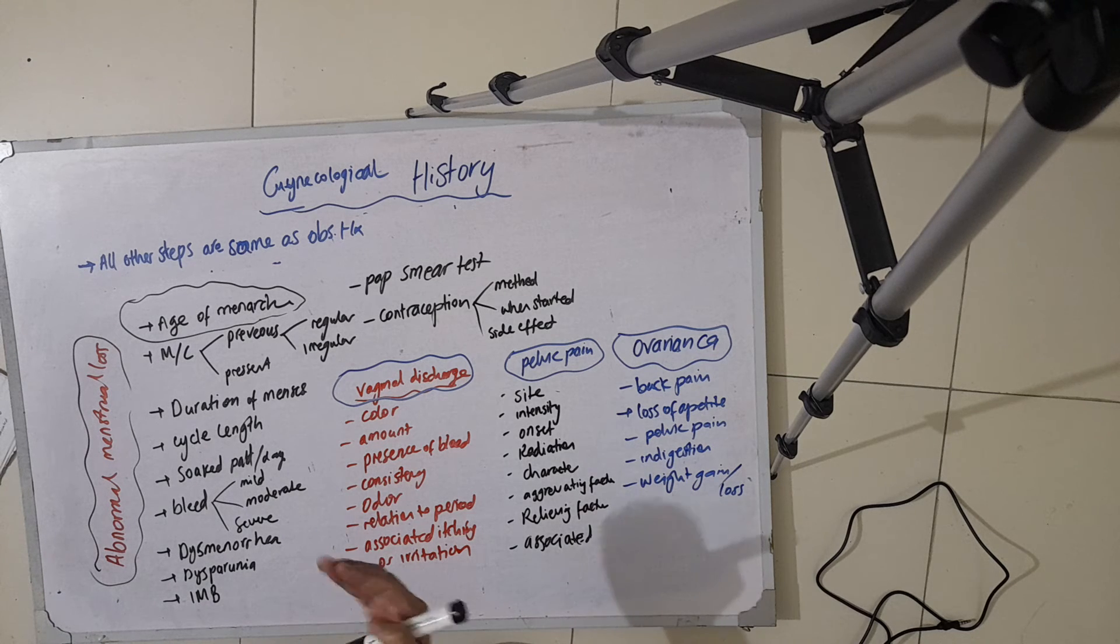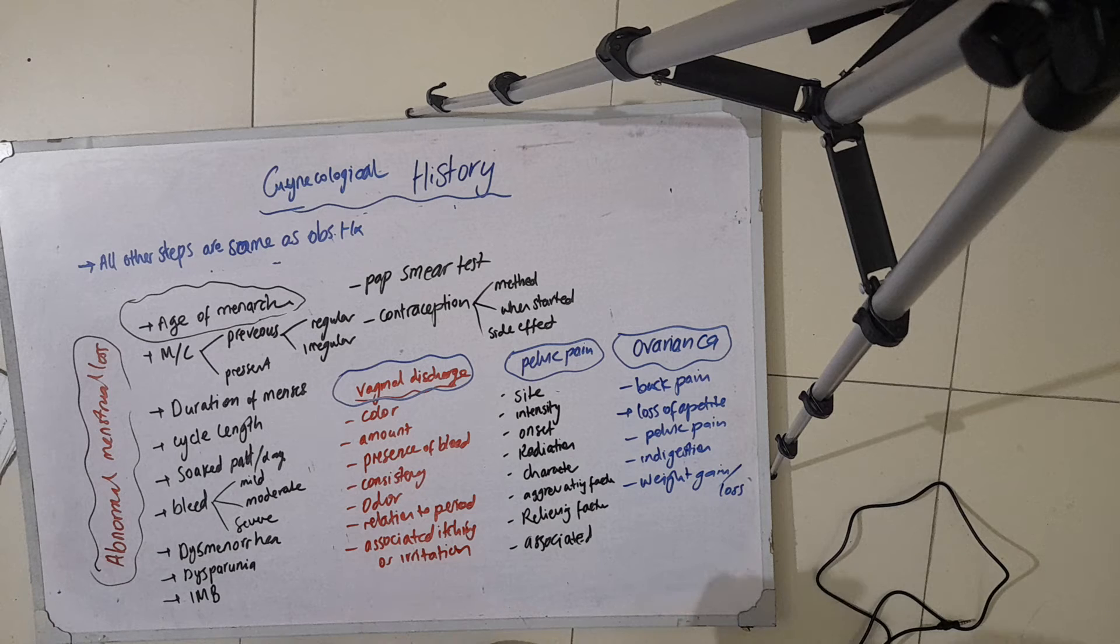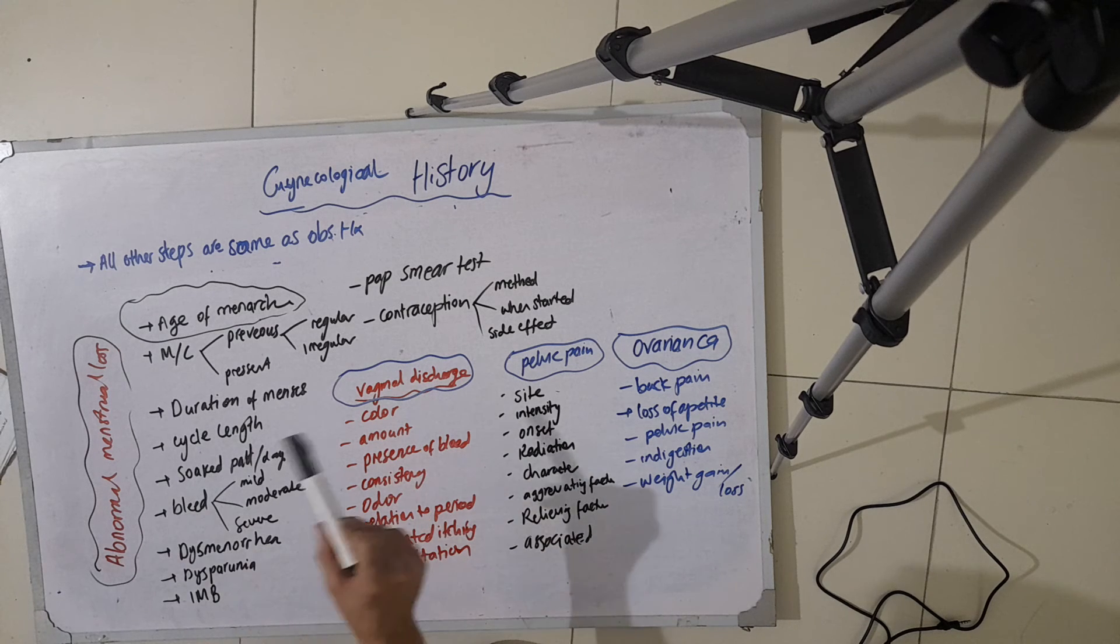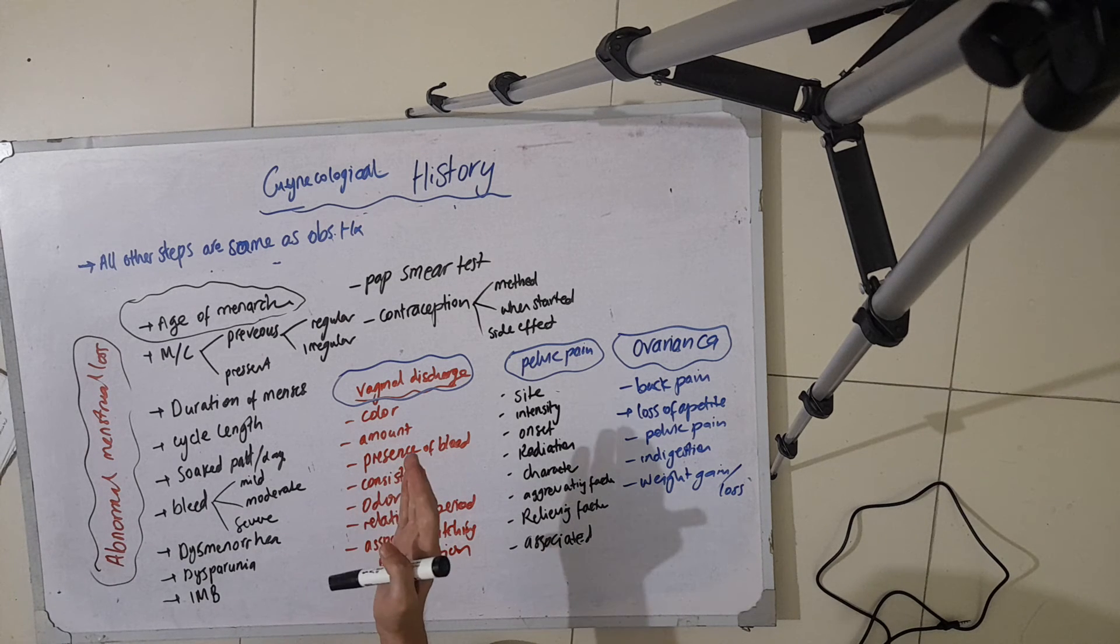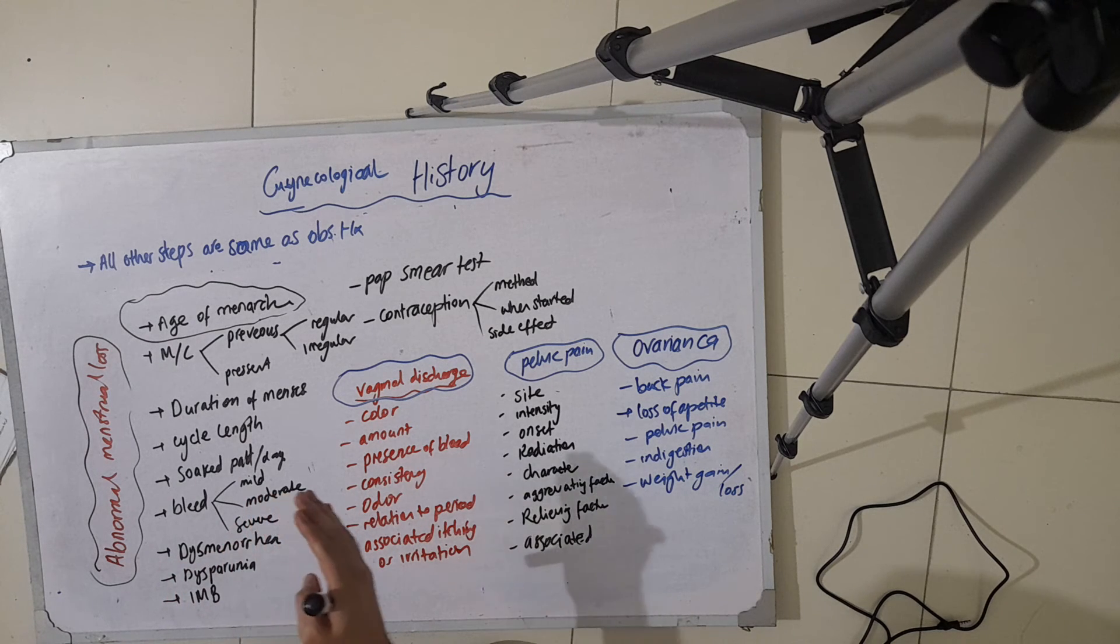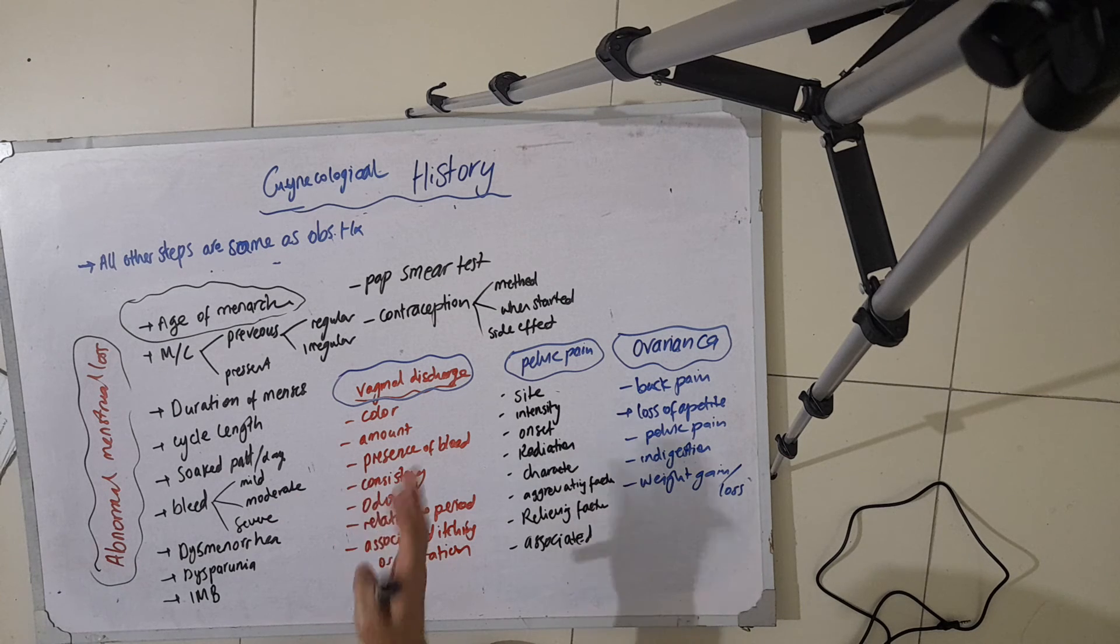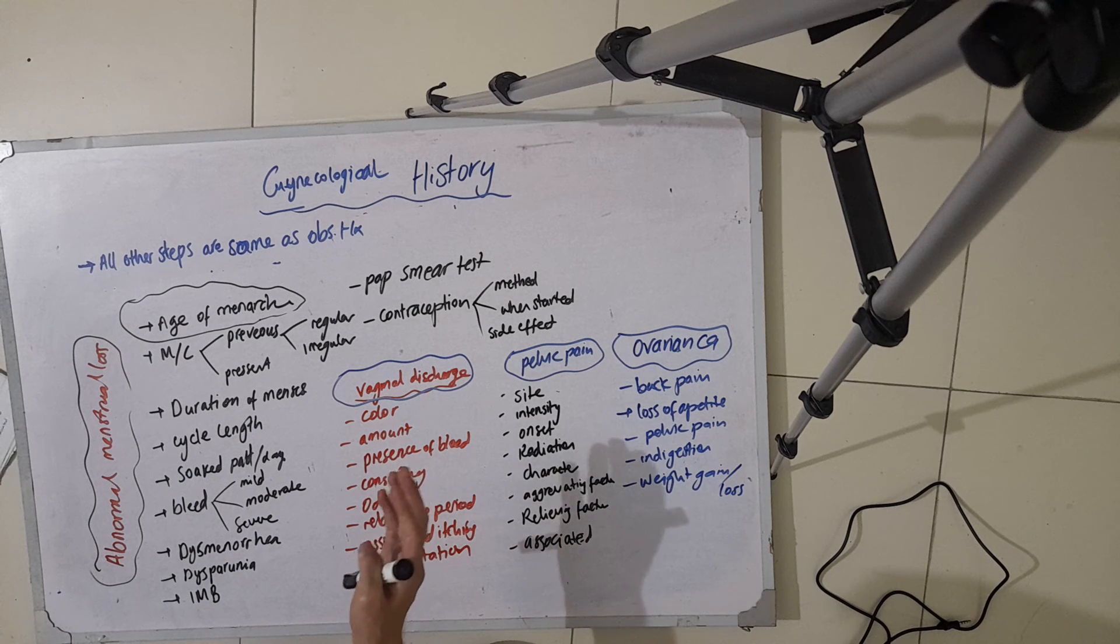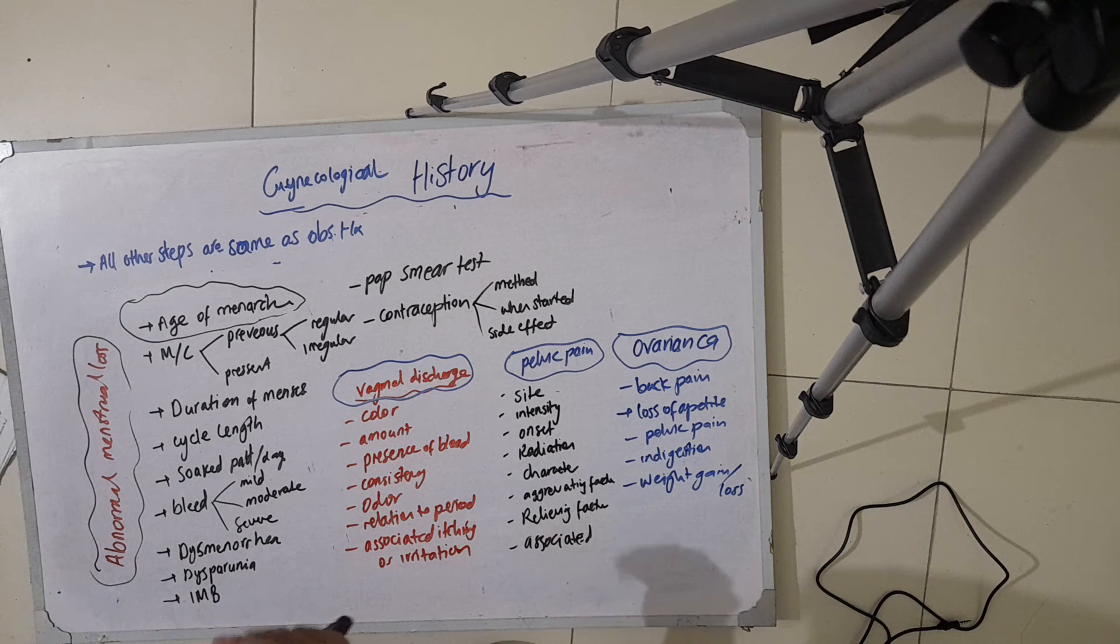For example, in obstetric history, you ask the details of children: their mode of delivery, date of delivery, place of delivery, their status, vaccination status, and any complications they had during delivery. In the past history, you ask about any medical illness which brought them to the hospital.